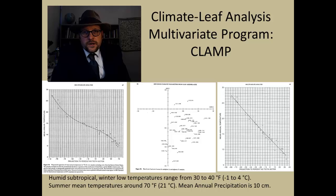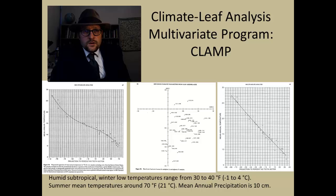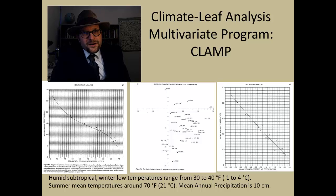For example, it would output: humid subtropical, winter low temperatures ranging from 30–40 degrees Fahrenheit (negative 1–4 degrees Celsius), summer mean temperatures around 70 degrees Fahrenheit (21 degrees Celsius), mean annual precipitation at 10 cm a year. What was so amazing was that we got mean annual temperatures and precipitation estimates for the geological past. However, it required a lot of work in coding all of those leaves, and that coding was somewhat subjective depending on who was doing it.